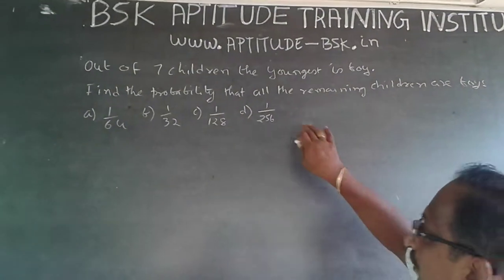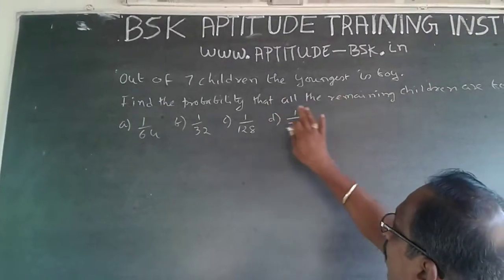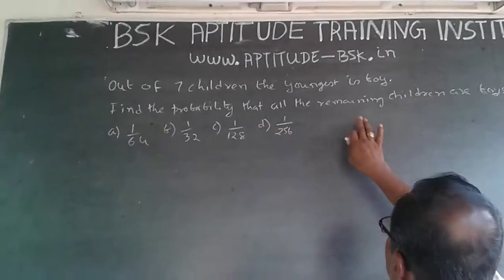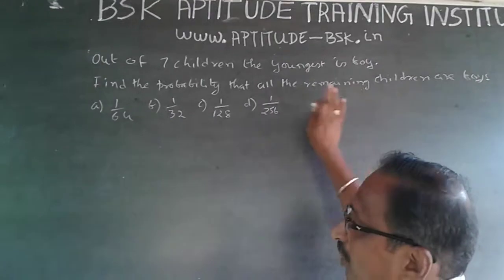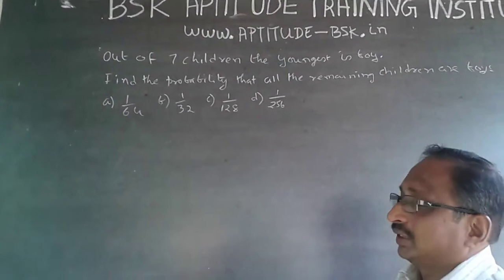The question is, out of 7 children, the youngest is boy. Find the probability that all remaining children are boys. The options are 1 by 64, 1 by 32, 1 by 28, 1 by 256.